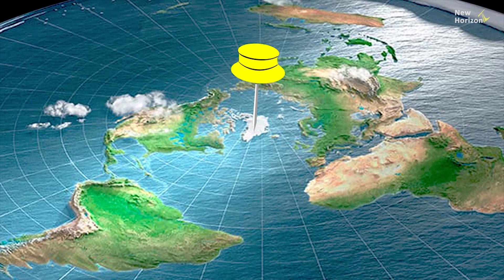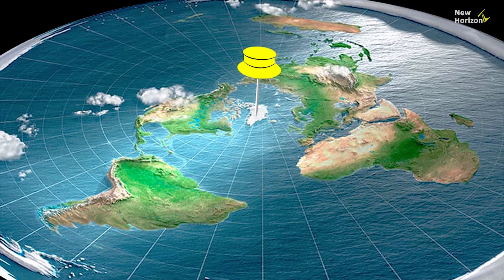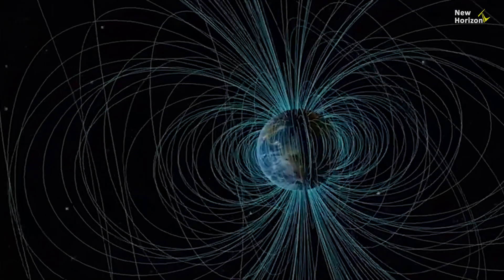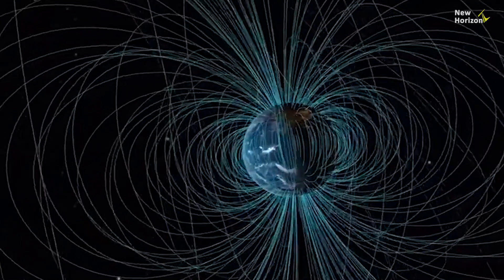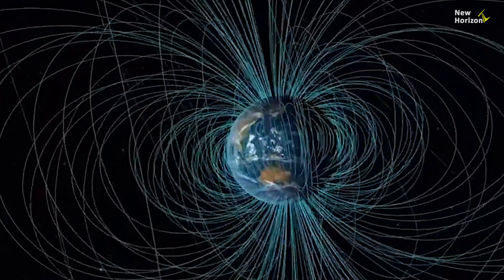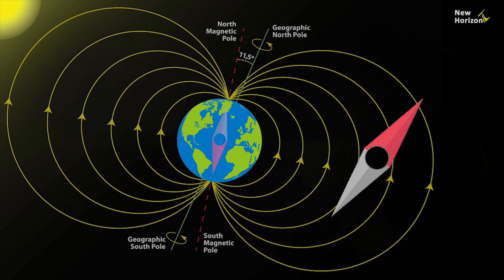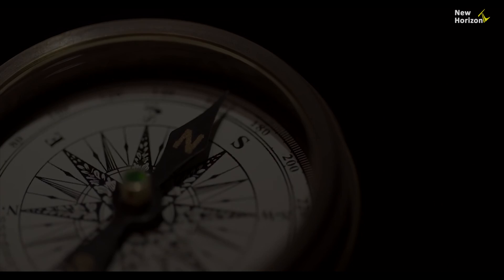According to the flat earth model, the Earth has only one pole — the North Pole — and the South Pole doesn't exist. Flat earthers can't explain the existence of magnetic field lines in the absence of a second pole. A compass would not work in the absence of the second pole, and on a flat earth it would not have a consistent reference point for determining direction.